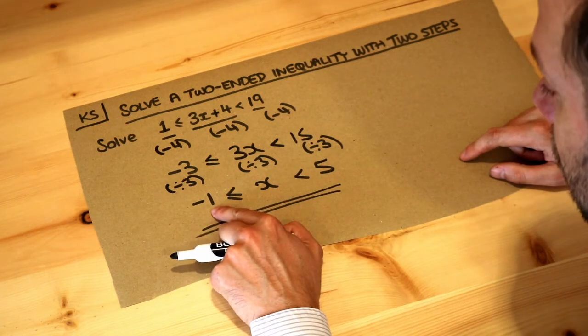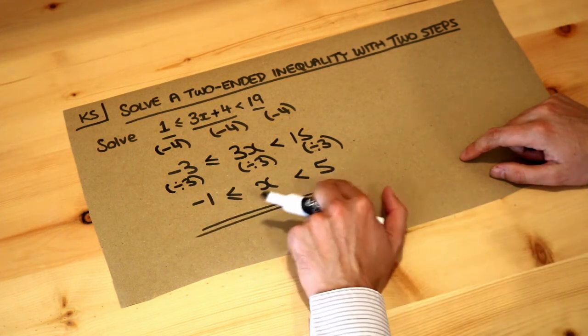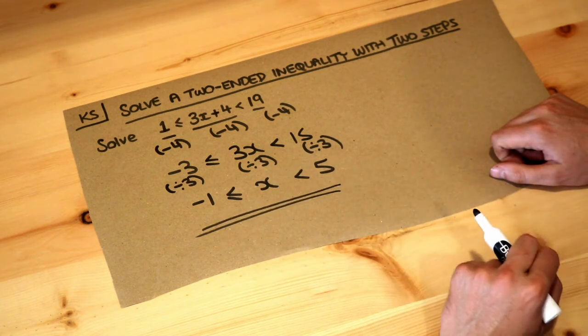So that's the final answer. X is between minus 1 and 5, includes minus 1 because X is greater than or equal to minus 1 but it doesn't include the 5 because X is strictly less than 5.